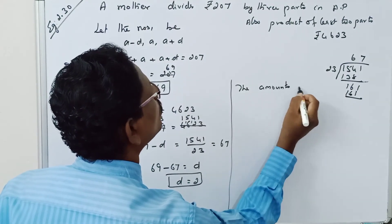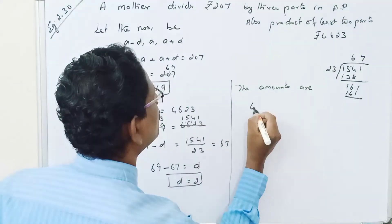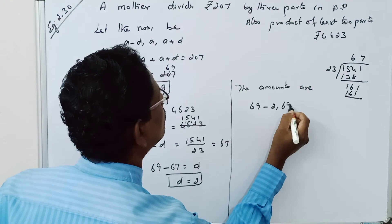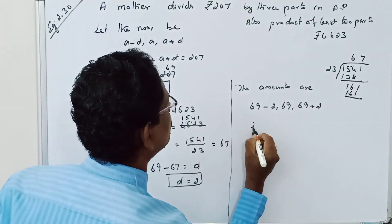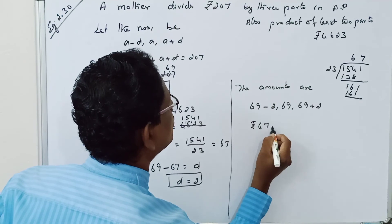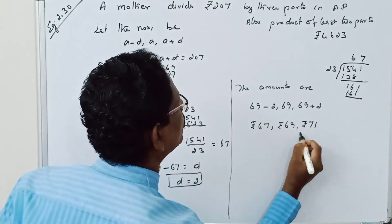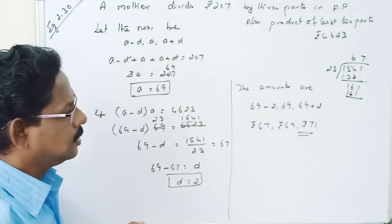Therefore the amounts are 69 minus 2, 69, and 69 plus 2. That is rupees 67, rupees 69, and rupees 71.